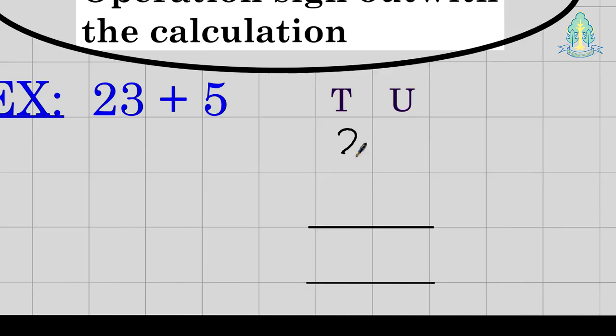the operation sign, the addition symbol in this case, is occupying a space in the tens column. This can lead to confusion, so what we must make sure that we do is keep the operation sign out with the calculation, and now we have it out with and everything's properly aligned, we can start from the right hand side and carry out the addition.